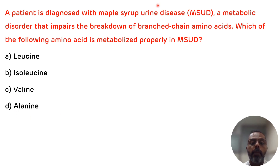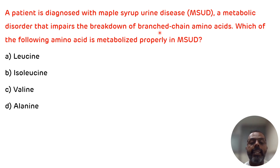As we all know, Maple Syrup Urine Disease, which is also known as branched-chain ketoaciduria, is a metabolic disorder in which there is impaired breakdown of branched-chain amino acids. The basic defect is deficient decarboxylation of branched-chain keto acids due to deficiency of the branched-chain alpha-ketoacid dehydrogenase enzyme. Due to deficiency of this enzyme, the alpha-keto acids of branched-chain amino acids accumulate in the blood, CSF, and urine.